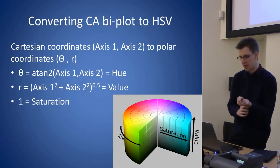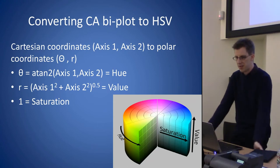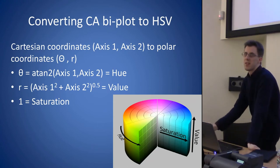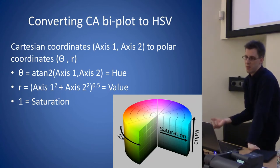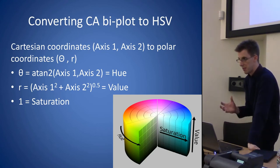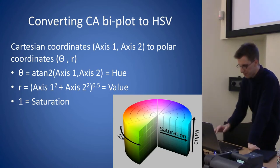What we're basically doing is taking the Cartesian coordinates from the correspondence analysis plot and turning them into polar coordinates of an angle and a distance.